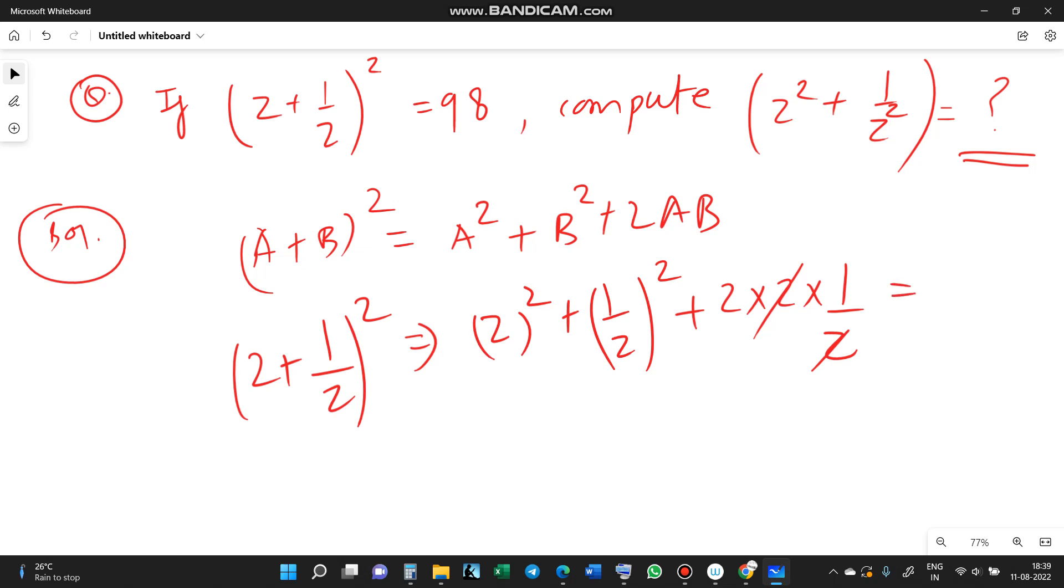And its value is 98, then here Z square plus 1 by Z square is equal to 98 minus 2. It becomes 96, this is your answer.